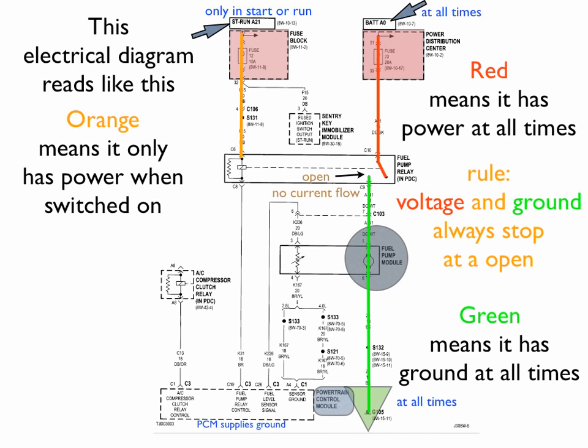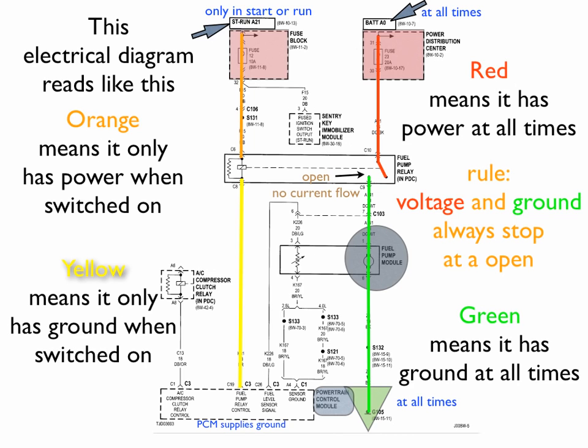Now, we look down here. We see that the PCM supplies ground for the fuel pump relay control. So we're going to color this yellow. Now yellow means it only has ground when it is switched on. If you notice on the right, the red is power at all times. It is not switched on. And the green is ground at all times. It is not switched on. But if something has to be switched on the power side, we color it orange. Or if it has to be switched on on the ground side, we always color it yellow.